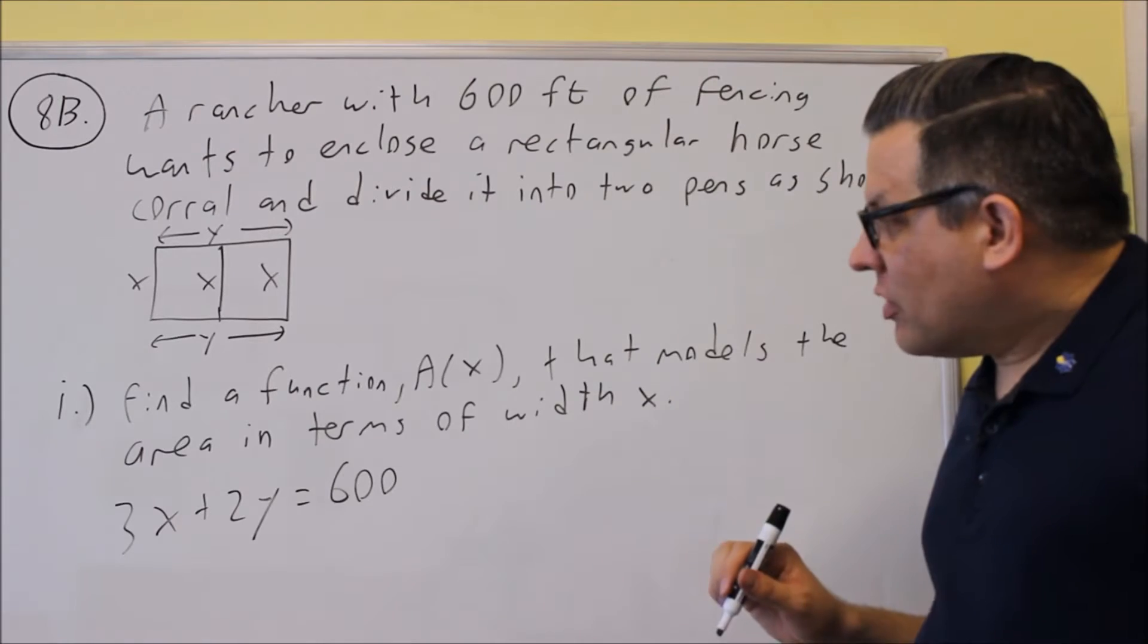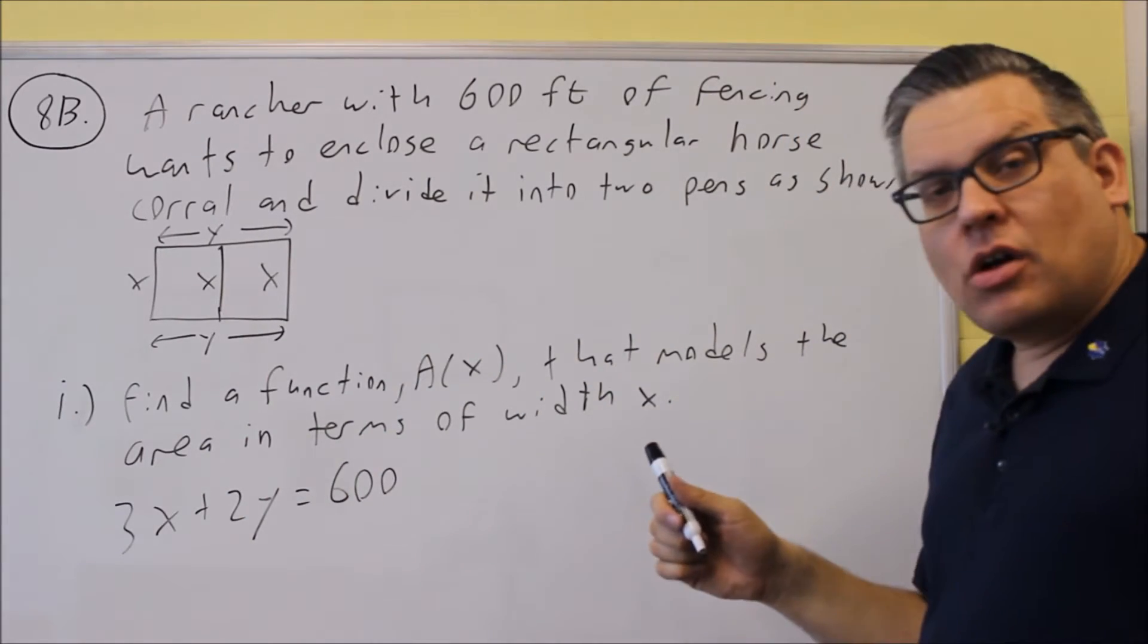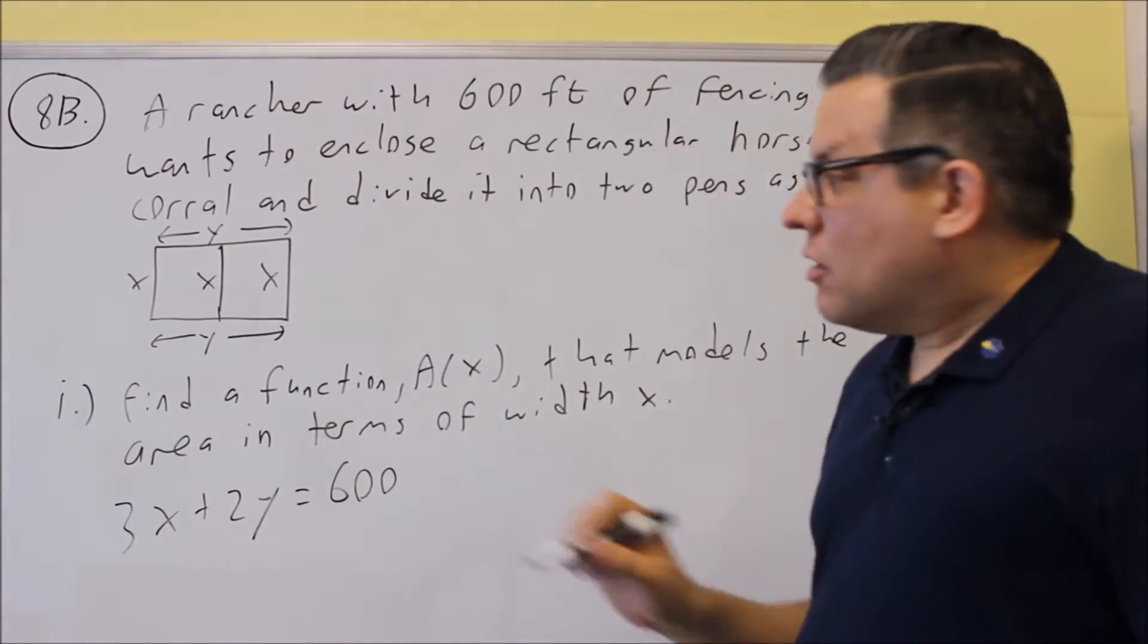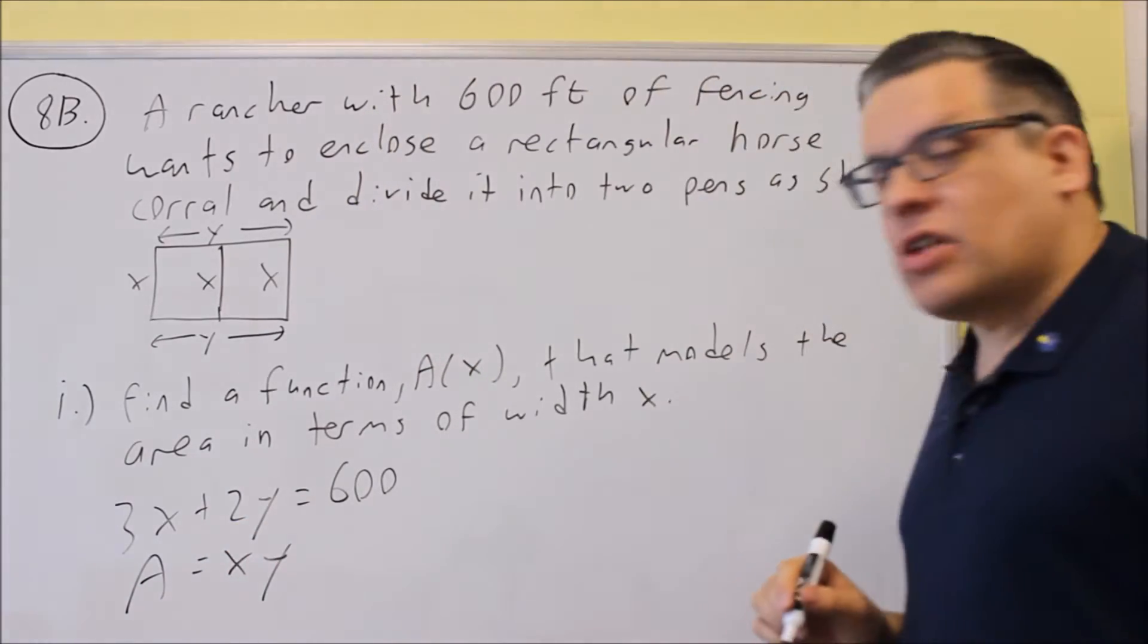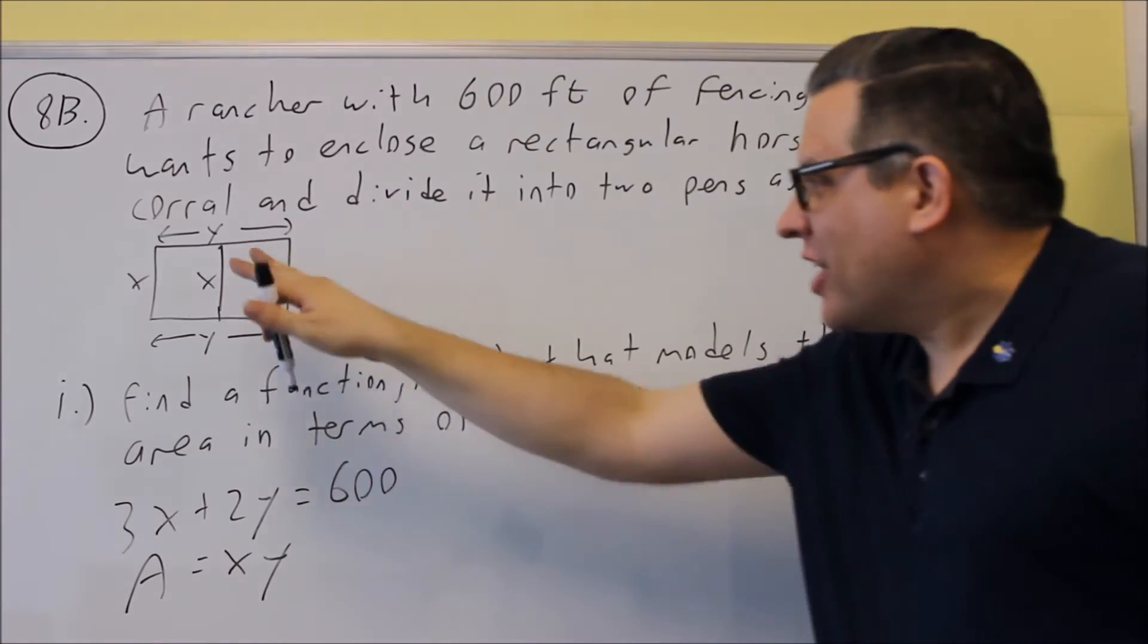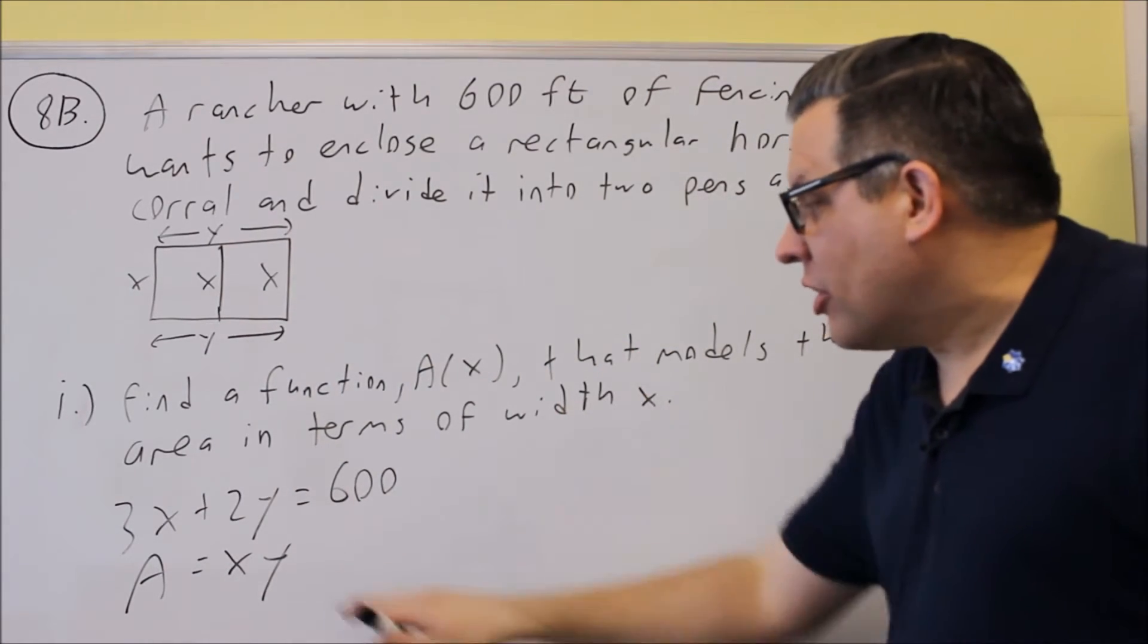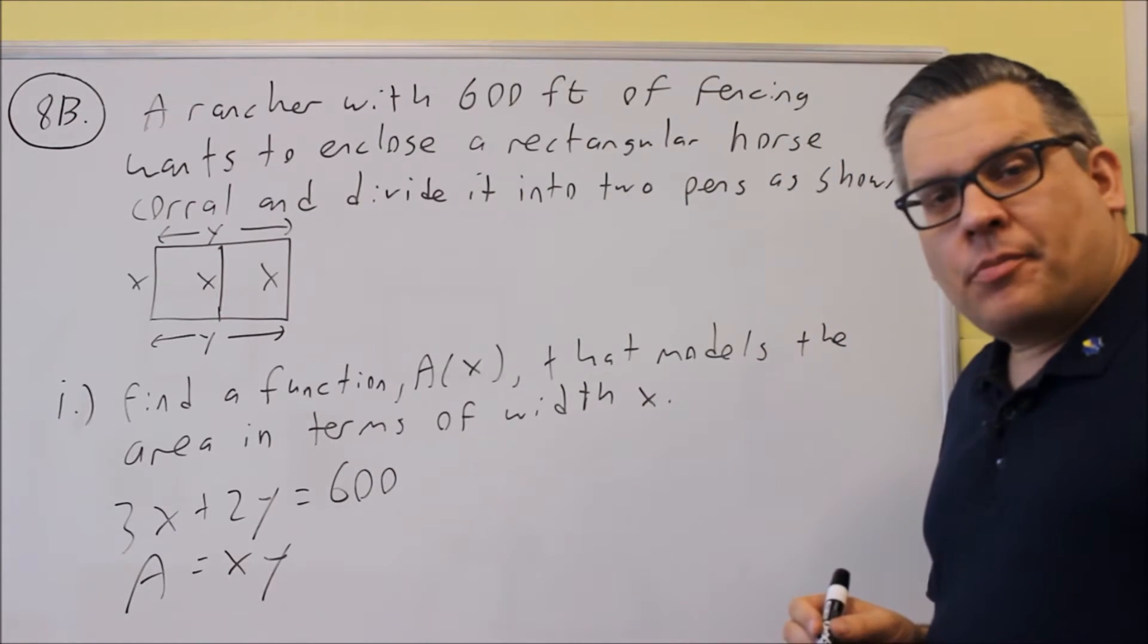Now, the other formula that I have here is area, because it's asking me for an area. And based on the way I label this, your area is going to be the area of the whole entire thing. So it's going to be length times width, so area is equal to x times y. And that would be the total of both the pens together. I'm just going to do area equals x times y.